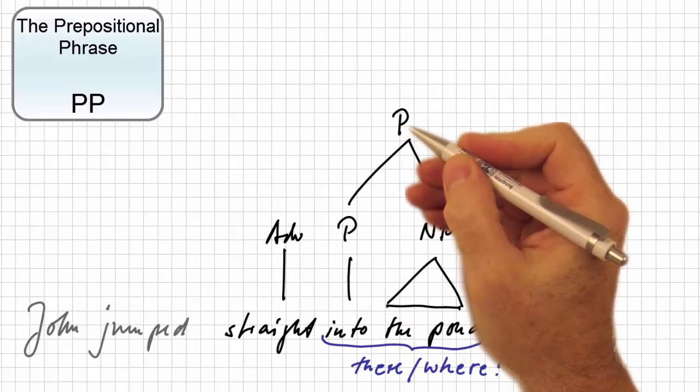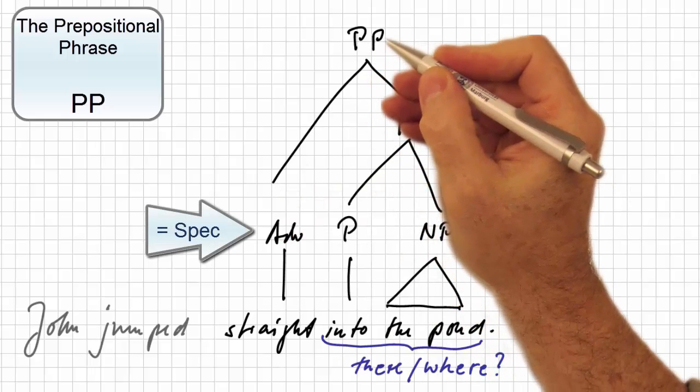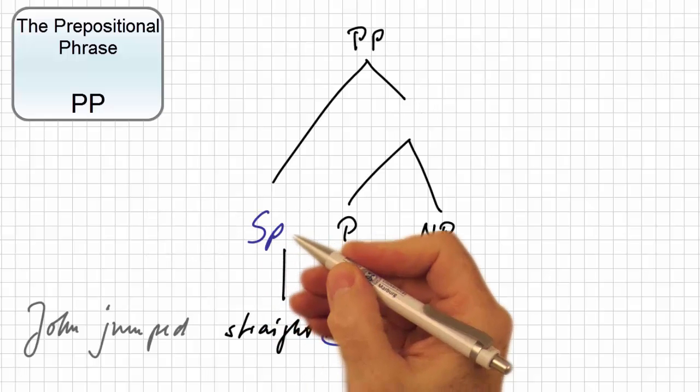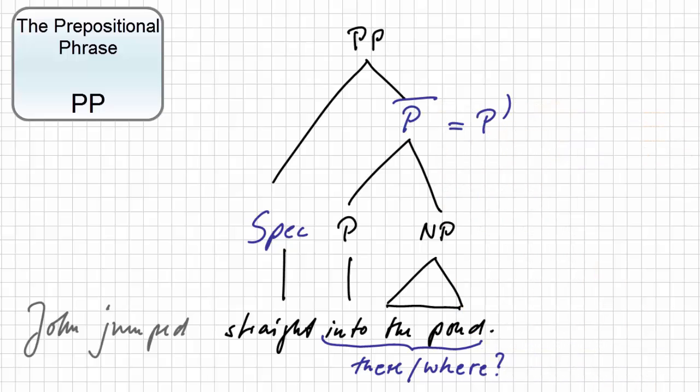So, together with the adverb, which is the specifier of the prepositional phrase, we get this structure, where the internal prepositional phrase is represented as p-bar, and as usual is written with an apostrophe. So this is the structure of a prepositional phrase.